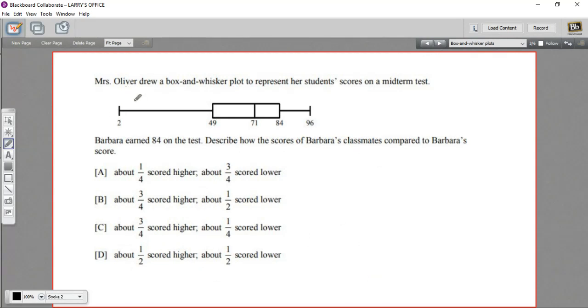This one says Mrs. Oliver drew a box and whisker plot to represent her students' scores on a midterm test. So all the data points represent a student with a score. So you know that one fourth of the students scored in that quartile, another fourth scored in that quartile, another fourth scored in that quartile,